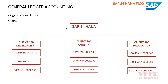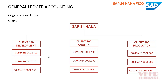In the SAP S4 HANA system, we install the SAP system in the client server. We install three types of systems — they are completely different from each other. They have their own master records, configuration, and everything. Because they are on the same server, they are connected together.